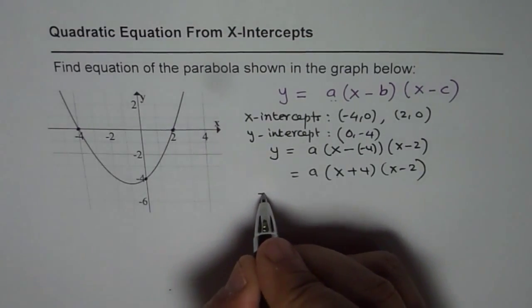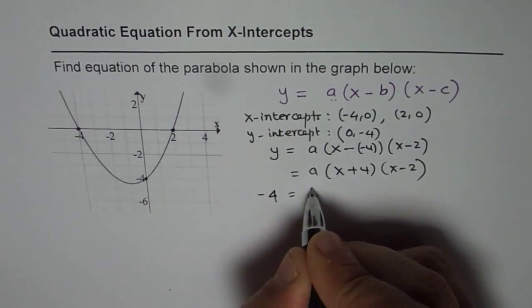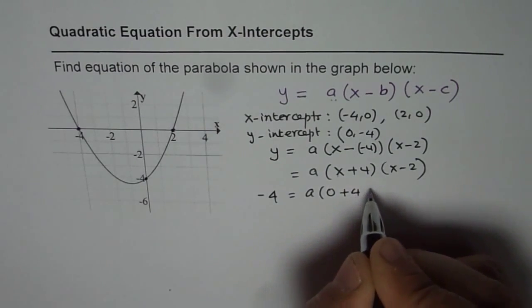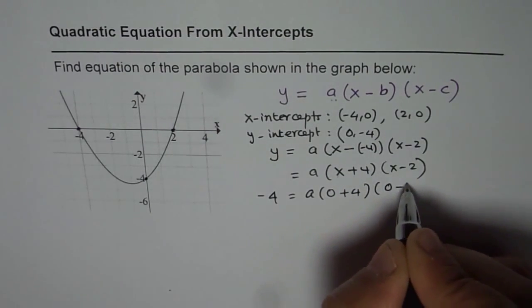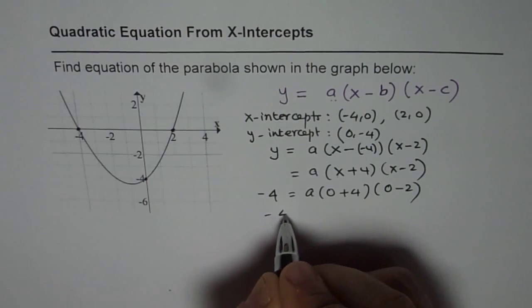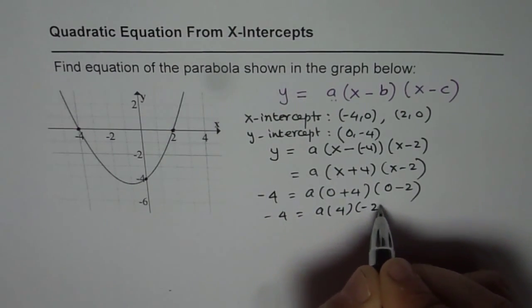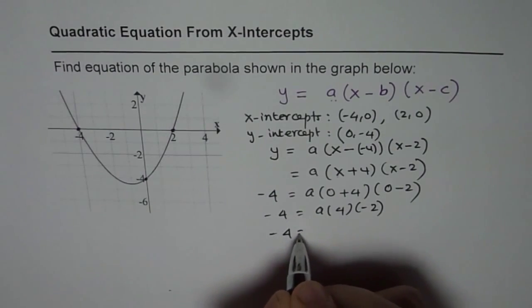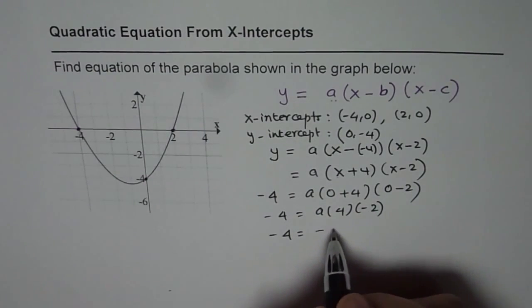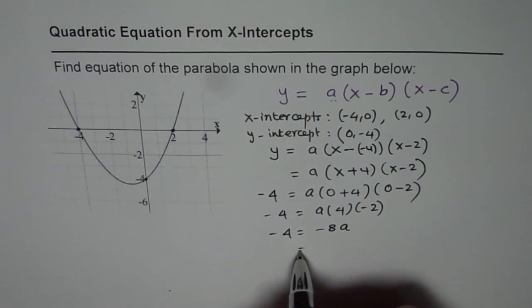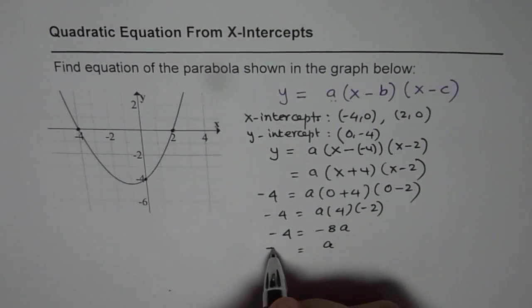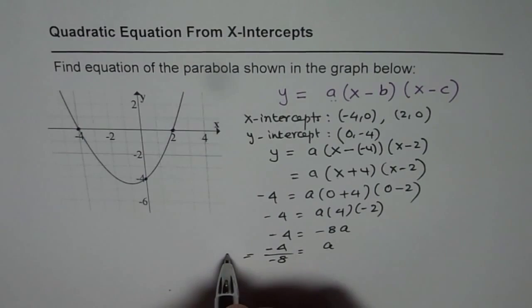So for y I will write minus 4, and for x I am going to substitute 0 to find the value of a. So that gives me a times 4 times minus 2. So we get minus 4 equals minus 8a, or a equals minus 4 divided by minus 8, which equals half.